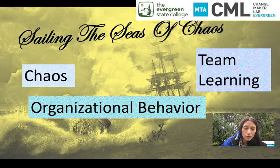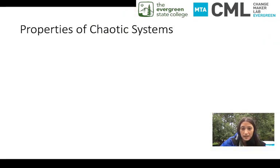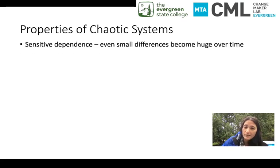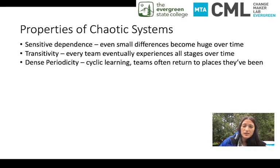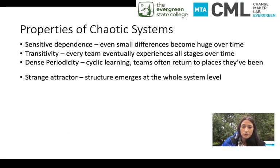So let's go back to our PowerPoint, do a quick review, and then move on to organizational behavior. The properties of chaotic systems: sensitive dependence — even small differences become huge over time. Transitivity — every team and every individual on the team eventually experiences everything there is to be experienced; all the stages are experienced over time in different ways. Dense periodicity — learning is going to be cyclic; you'll often return to places where you feel like you've already been, but there's always something new to learn. And the existence of strange attractors — the structure that emerges at the whole system level; if we trust the process, we will get to appreciate seeing ourselves as part of this emergent whole.